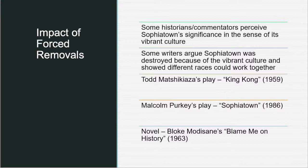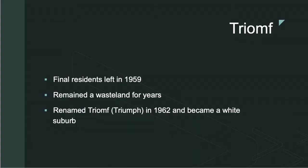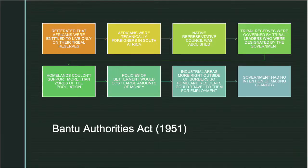Cultural works associated with Sofiatown include Todd Matshikiza's play King Kong, Malcolm Purkey's play Sofiatown, and Bloke Modisane's novel Blame Me on History. The final residents left in 1959, and it remained a wasteland for years before being renamed Triomf in 1962, becoming a white suburb. The Bantu Authorities Act reiterated that Africans were entitled to live only on their tribal reserves, making Africans technically foreigners in South Africa. The Native Representative Council was abolished. Tribal reserves were governed by tribal leaders designated by the government. Homelands couldn't support more than two-thirds of the population, and industrial areas were placed just outside borders so homeland residents could travel to them for employment.